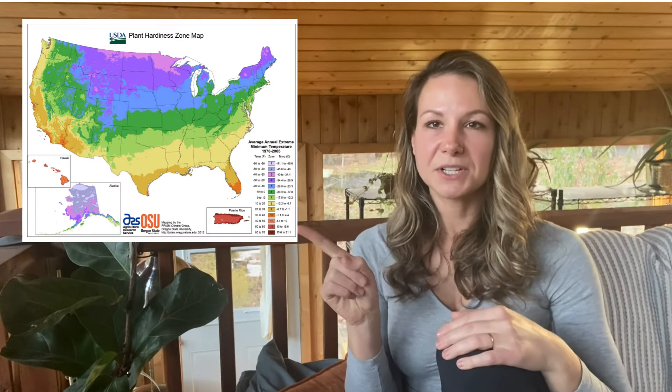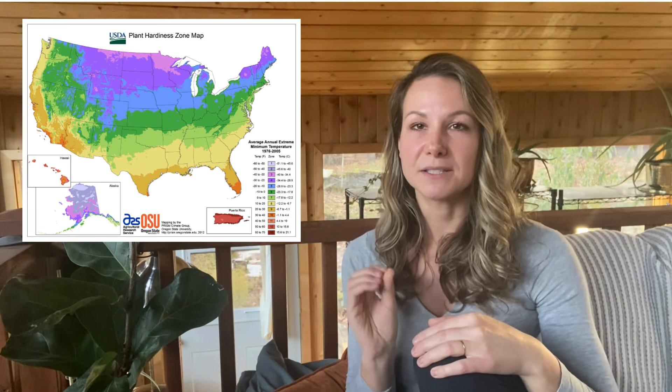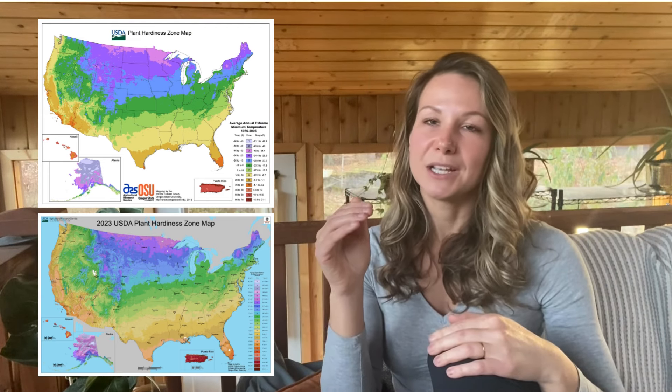Let's look at a previous USDA map. This particular hardiness zone map is from 2015. Keep in mind it had not been updated since 2012, so these zones would have remained the same from 2012 up until just a few days ago. Comparing that to the updated 2023 map, you might notice that a significant portion of the country was actually increased by at least one zone into a warmer growing zone.